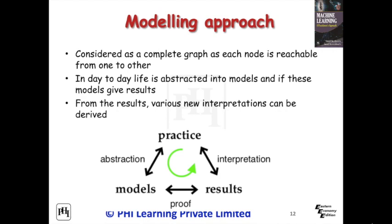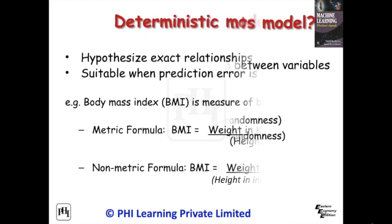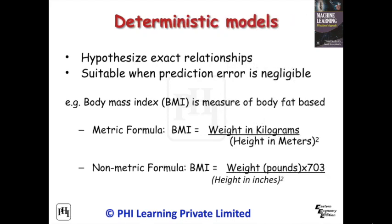From the results, various new interpretations are derived which can alter the models. As this is a complete graph, the process can be seen as a two-way system. A statistical model is a mathematical model that embodies a set of statistical assumptions concerning the generation of sample data and similar data from a larger population. A statistical model represents, often in considerably idealized form, the data-generating process. In mathematics, computer science, and physics, a deterministic system is a system in which no randomness is involved in the development of future states of the system.